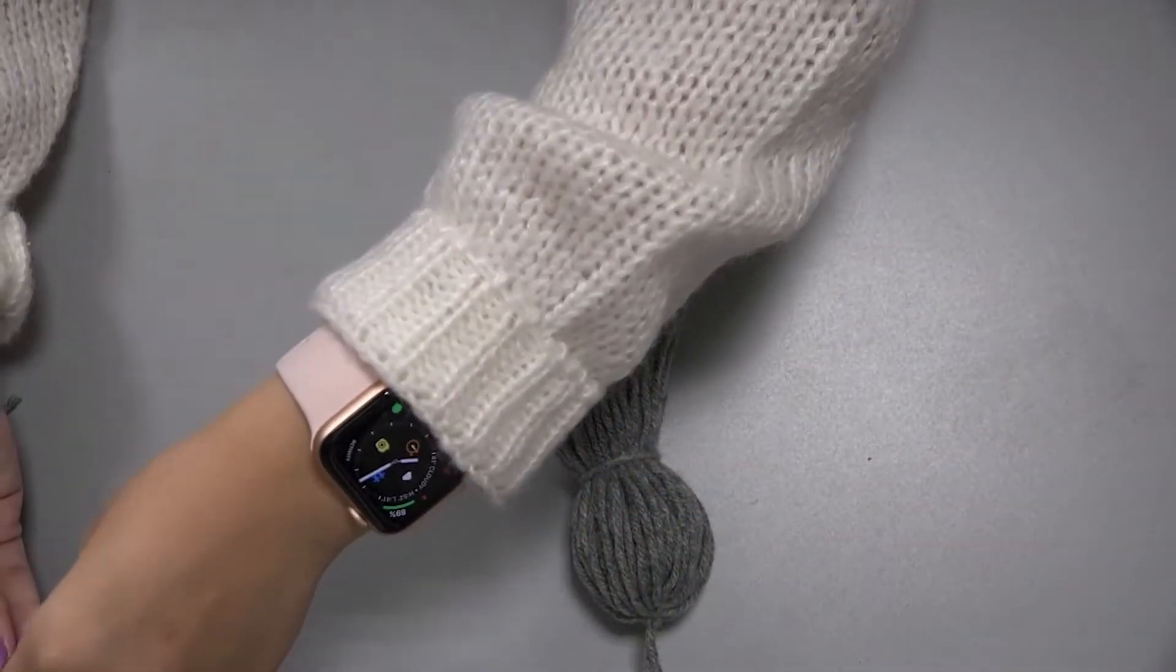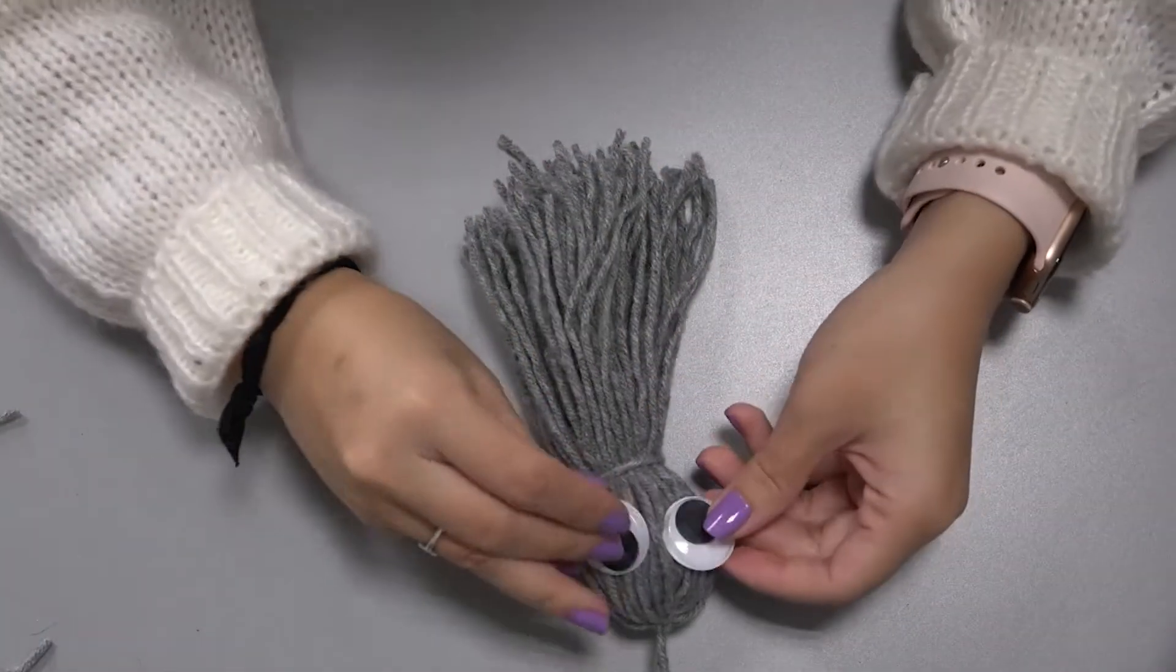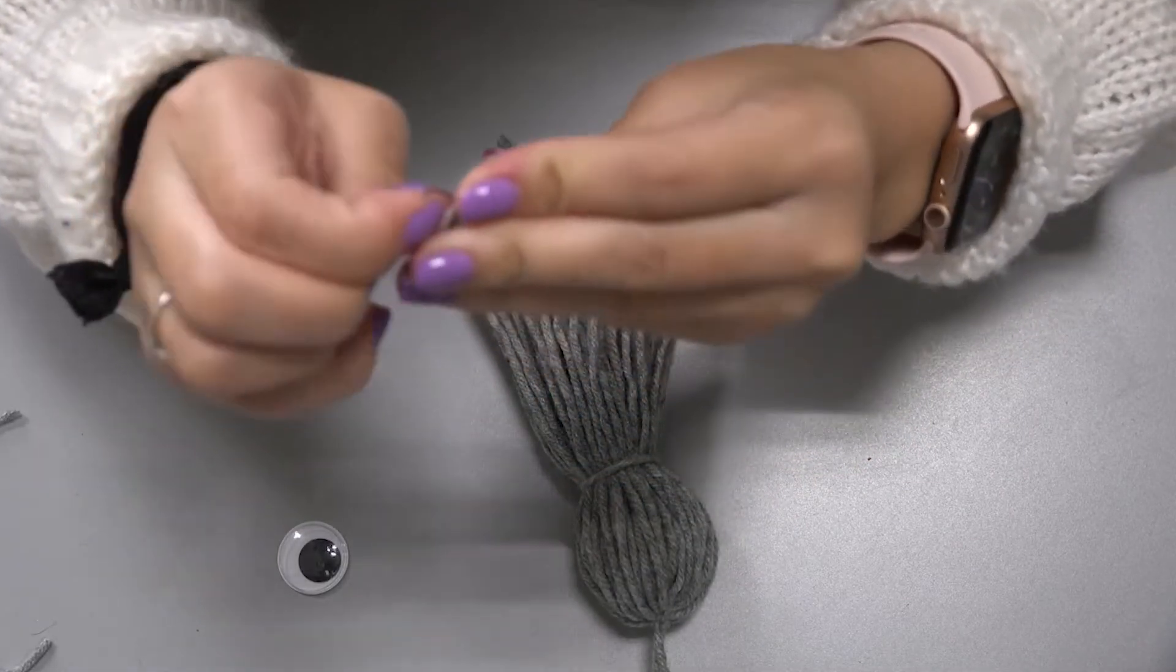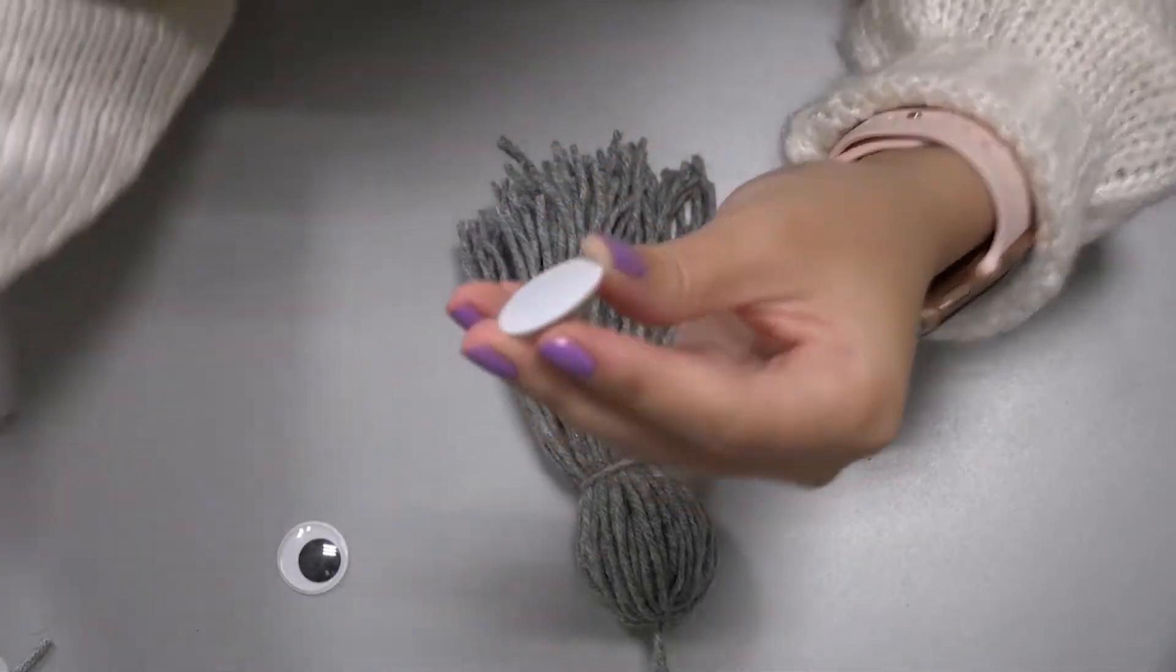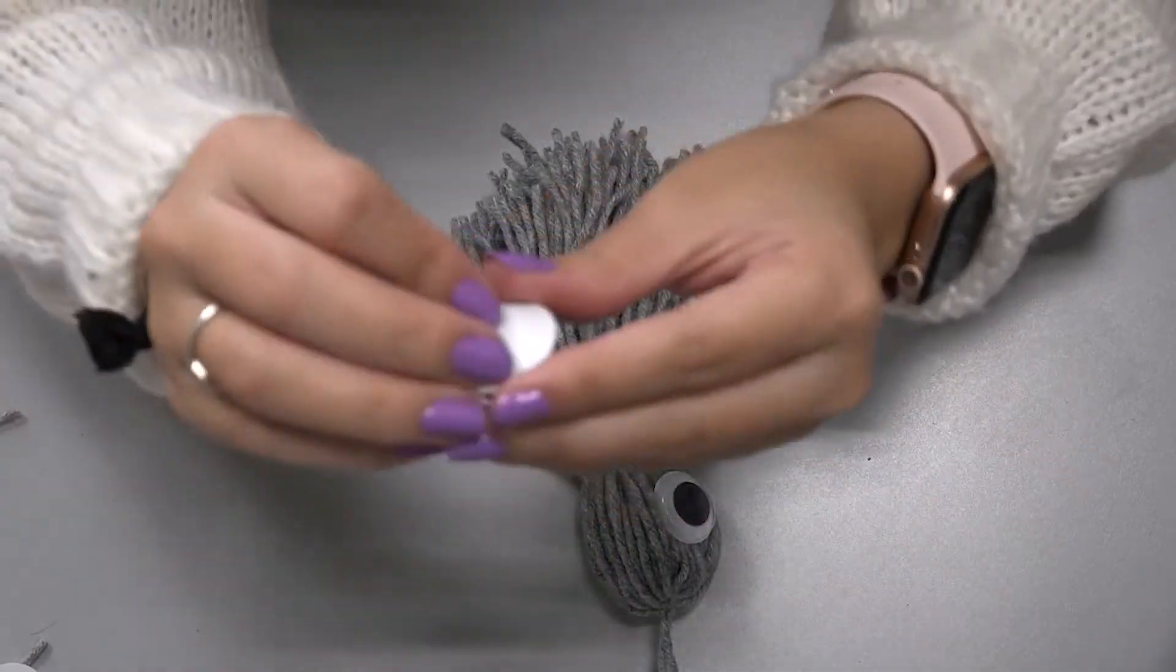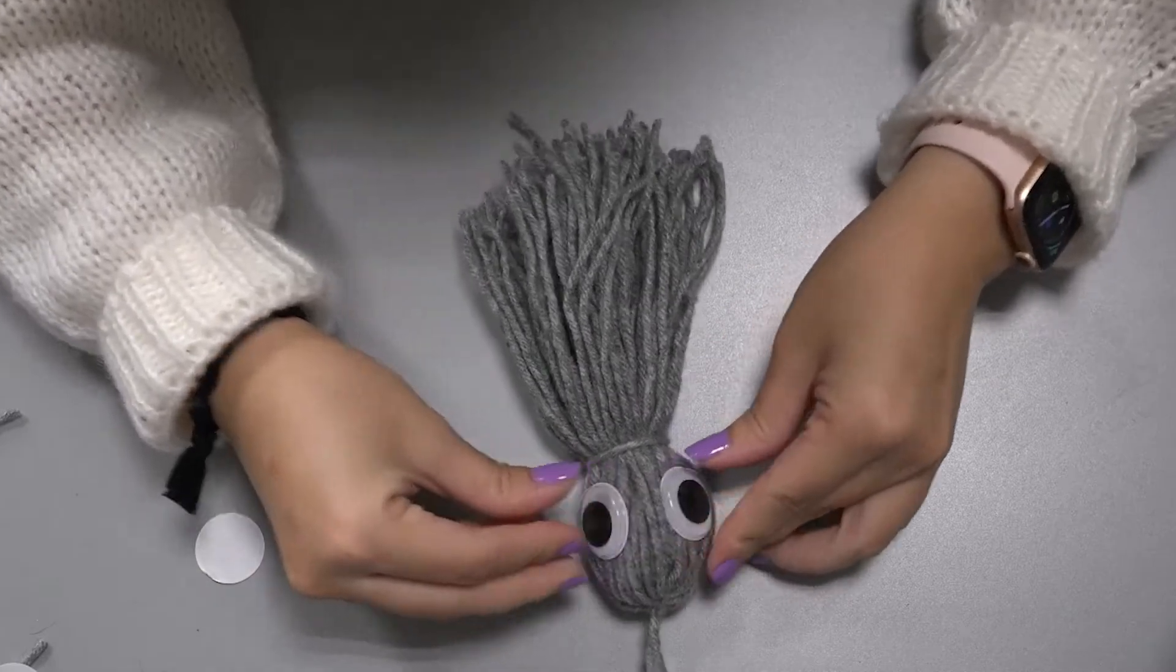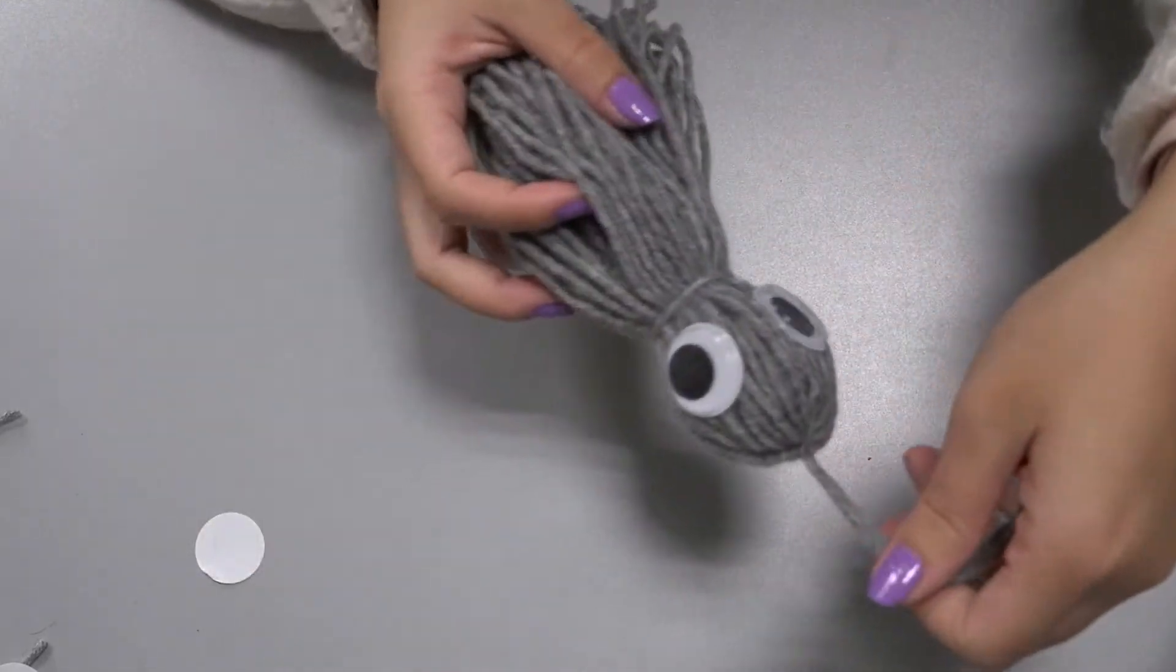Then we're going to grab our eyeballs. These are perfect. And then these eyeballs, they're adhesive eyeballs, so they have stickies on the back side of it. So all I'm going to do is just stick it on. And there you go. You got your ghost.